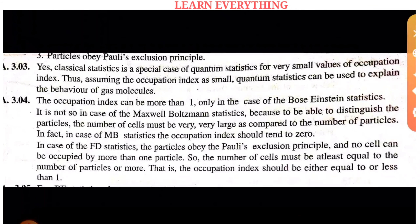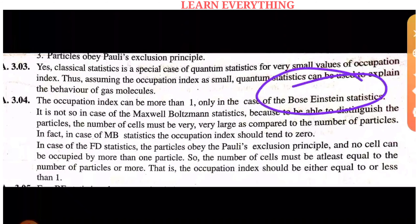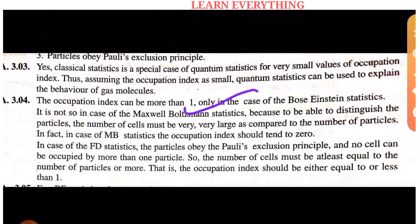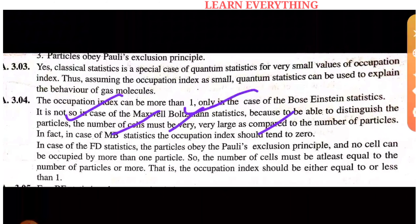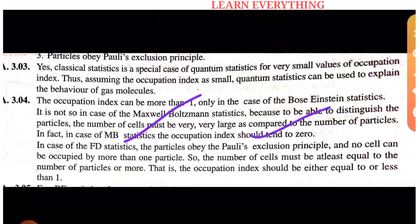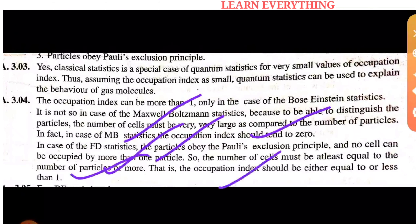The occupation index can be more than one only in the case of Bose-Einstein statistics. In MB statistics the occupation index tends to 0; in FD statistics the occupation index is either 0 or 1, so it is less than or equal to 1.